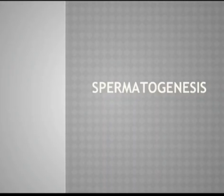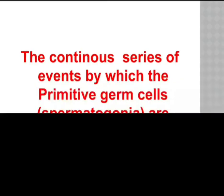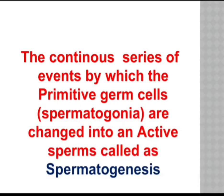We are going to discuss about spermatogenesis. Spermatogenesis is the continuous series of events by which the primitive germ cells, or spermatogonia, also called sperm mother cells, produce active sperms. So we can clearly say that the formation of sperm from the sperm mother cell is called spermatogenesis.